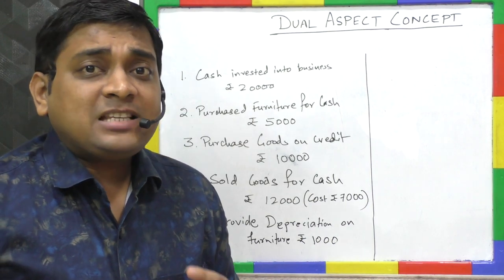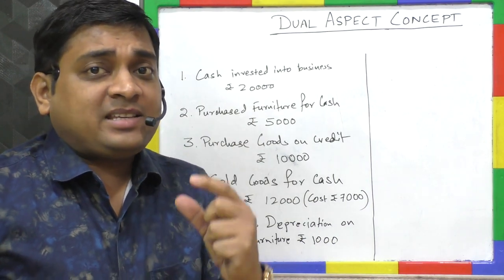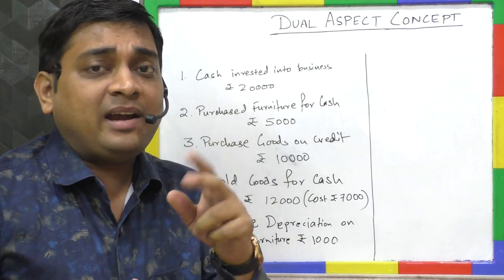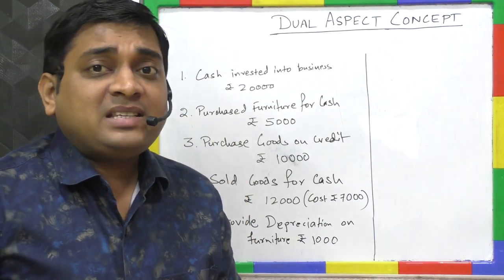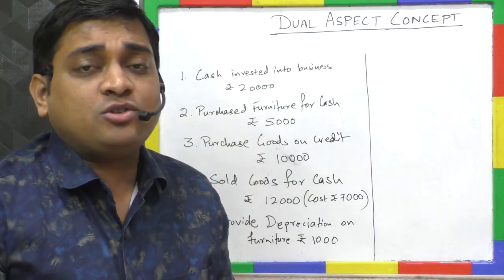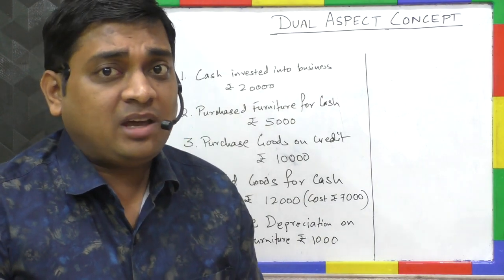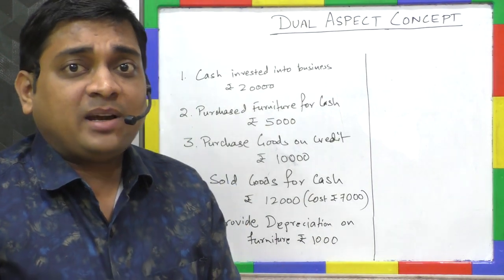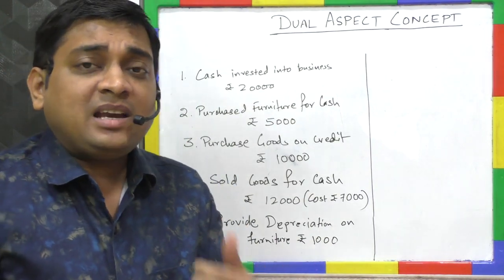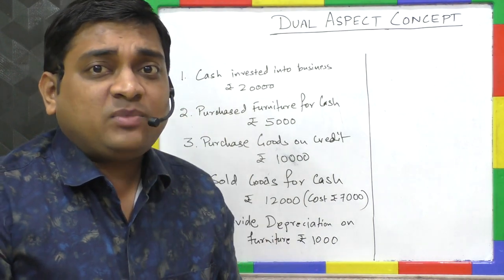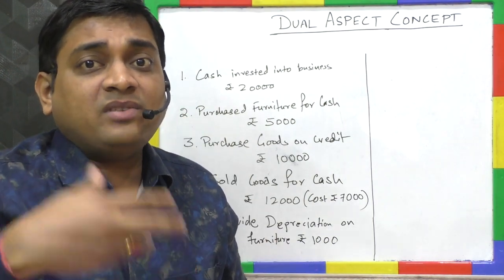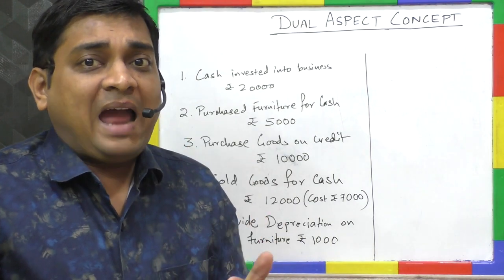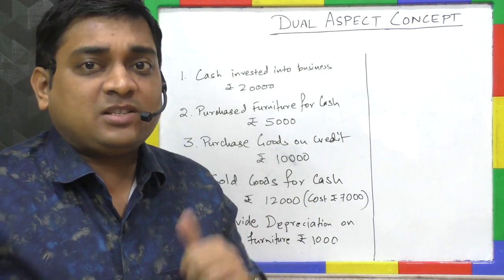The dual aspect concept is like a coin with two sides — head and tail. In business, there are two aspects: one receiving and another giving aspect. So basically we receive something and in respect of that we give something. Every business activity has twofold aspects — one receiving aspect and another giving aspect.